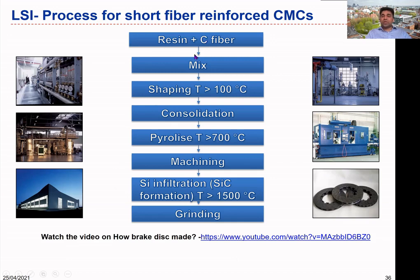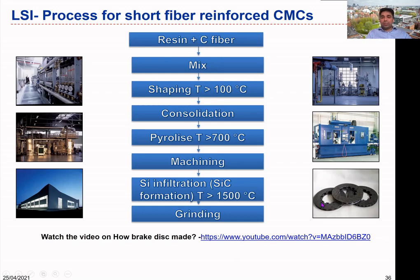Here are the possible steps for manufacturing brake discs using the liquid silicon infiltration process. We start with a suitable resin material and mix it with carbon fiber — here short carbon fiber is used, possibly in powder form, very small particles. Both resin and carbon fiber in powder form are mixed properly and then shaped. The shaping process takes place at about 100 degrees into the desired shape. Since it is powder form material, it is not yet consolidated, so we apply high pressure to consolidate it into the desired shape to achieve the desired density of the brake disc.